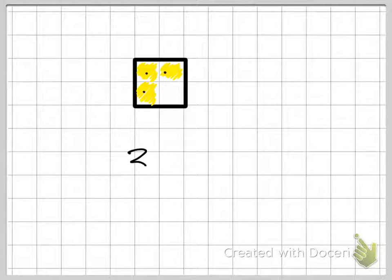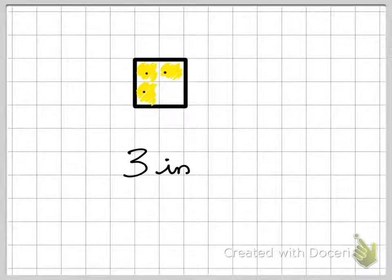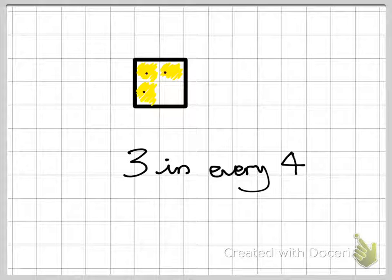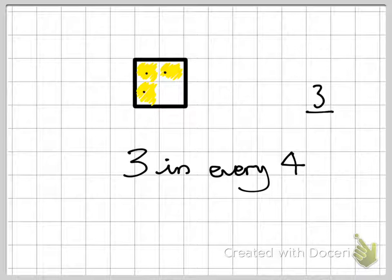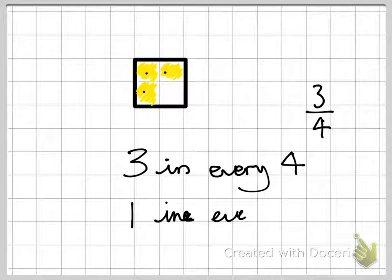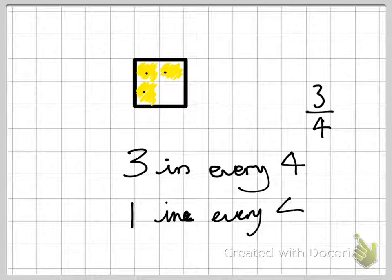So I can say that 3 in every 4 squares are yellow. And if I was to show that as a fraction, I'd write 3 quarters. Now, I could also say that 1 in every 4 squares are white. So I can show it from two different perspectives there.